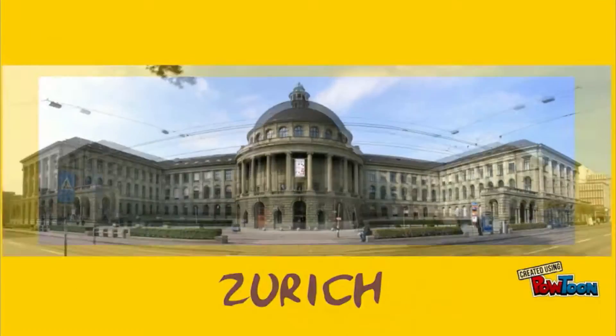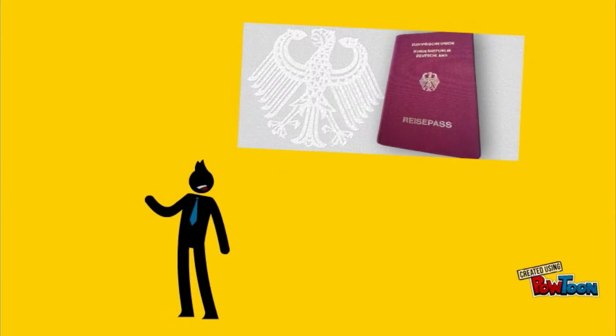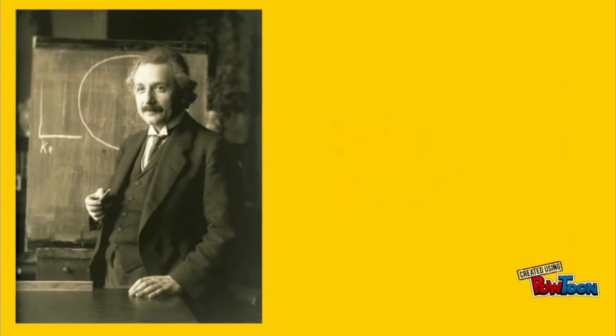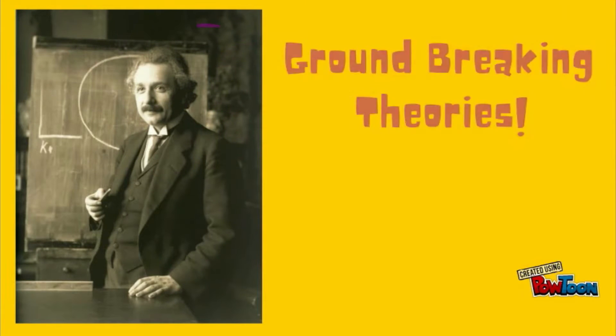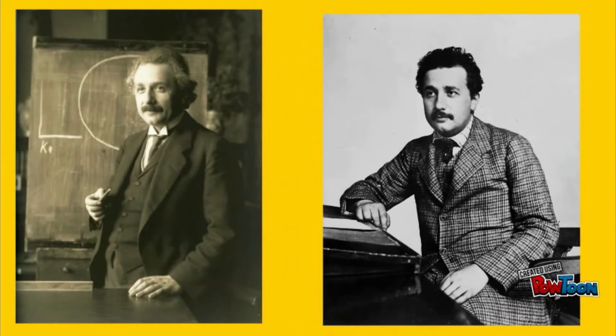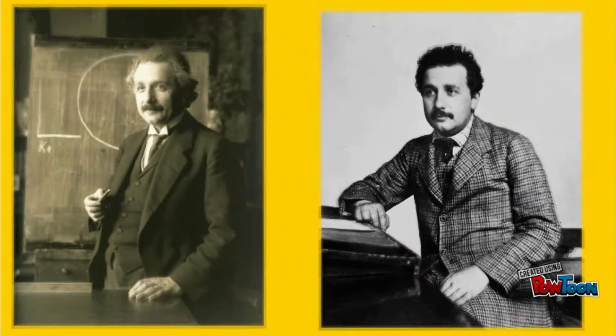He resumed his schooling and later gained admission to the Swiss Federal Polytechnic Institute in Zurich. In 1896, he renounced his German citizenship and remained officially stateless before becoming a Swiss citizen in 1901. The German-born physicist Albert Einstein developed four of his groundbreaking theories while working as a clerk in the Swiss Patent office in Bern.